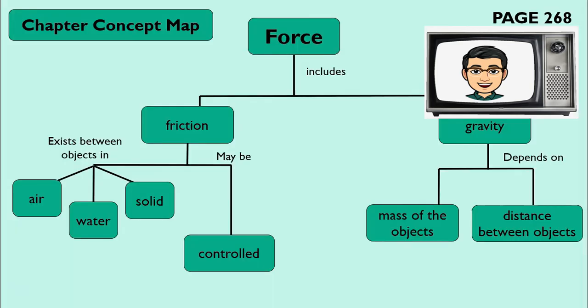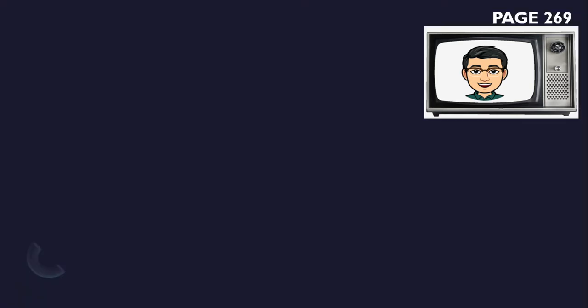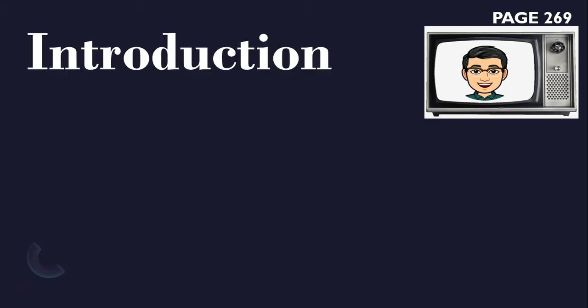Our essential question is: How does gravity relate with mass, weight, and motion of an object? Our big idea is that Earth's gravity pulls any object on or near it without direct contact.